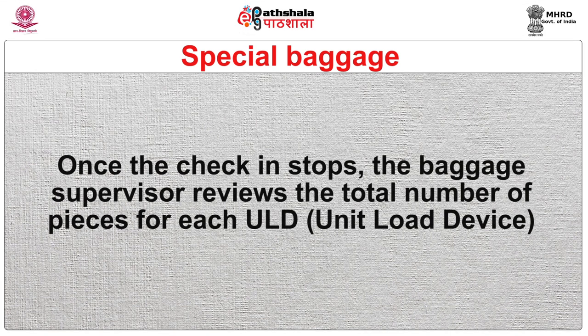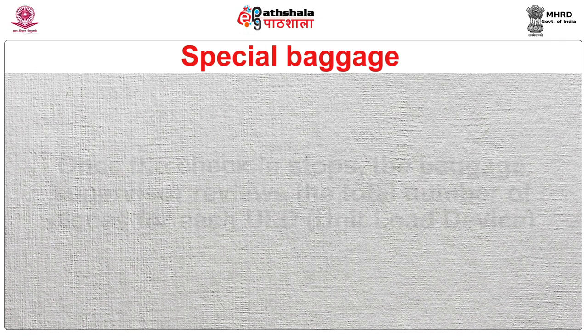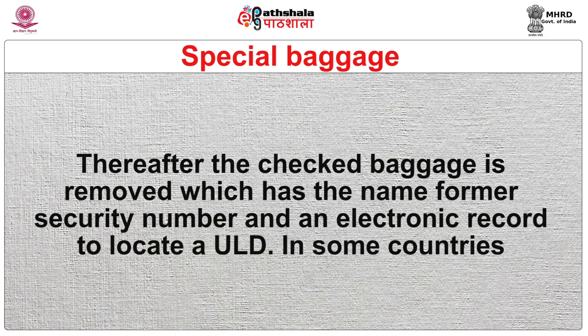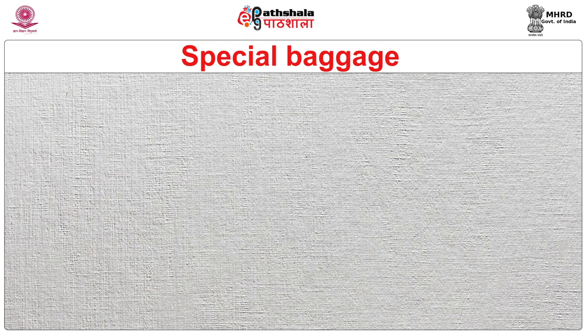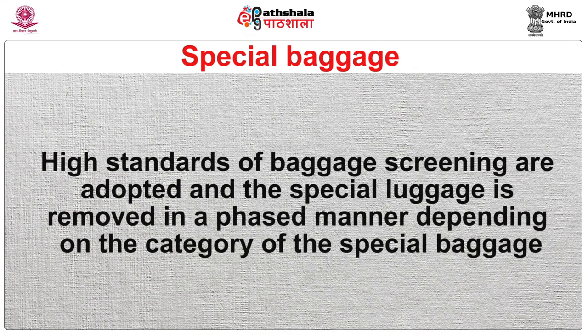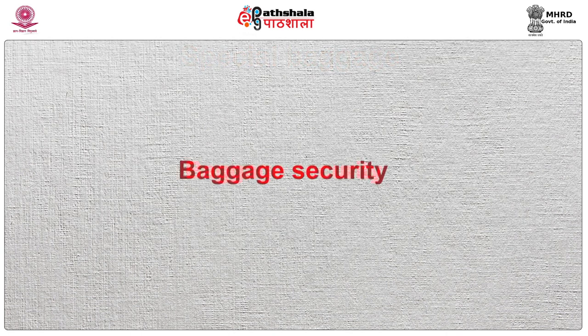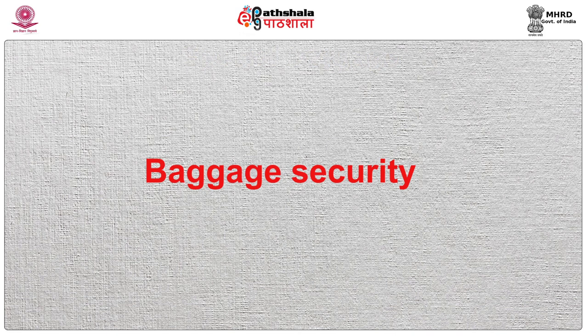Once check-in stops, the baggage supervisor reviews the total number of pieces for each ULD (unit load device). Thereafter, the checked baggage is removed with its name, security number, and an electronic record to locate a ULD. In some countries, high standards of baggage screening are adopted and special luggage is removed in a phased manner depending on the category of special baggage.